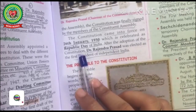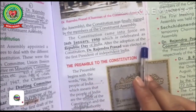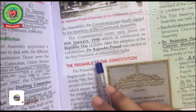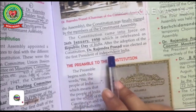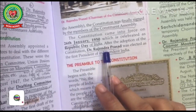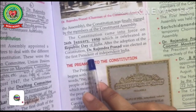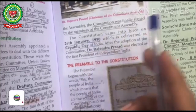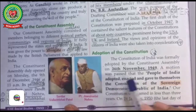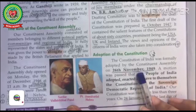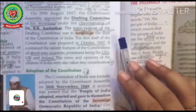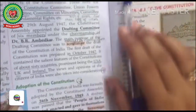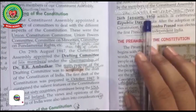After the adoption of the Constitution, Dr. Rajendra Prasad was elected as the first President of independent India. Our Constitution came into force on 26th January 1950, though it was adopted on 26th November 1949 — a gap of two months. Why this gap? To mark the importance of 26th January in history.